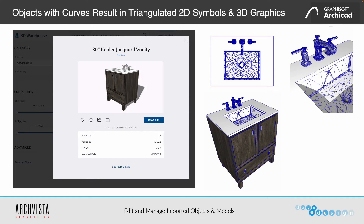But when we start to bring in something that looks like it should be similar to that stove — a pretty rectangular cabinet — but the sink has curves to it, and the taps also have curves, as a result we end up with a messy 2D graphic and messy 3D graphics. They can really affect the quality of our drawings and renderings. This is the kind of issue we'll also discuss how to solve with ModelPort.